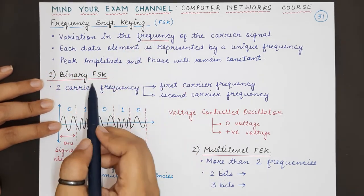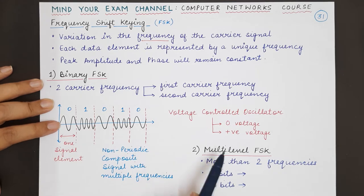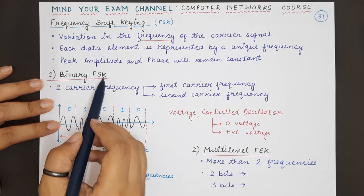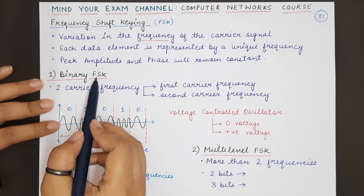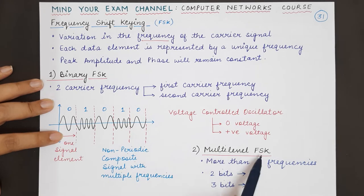Just like amplitude shift keying, there are two forms of frequency shift keying: binary FSK and multi-level FSK.